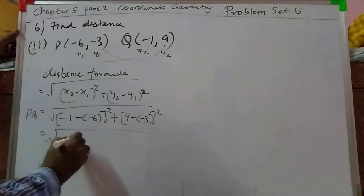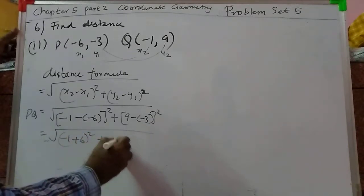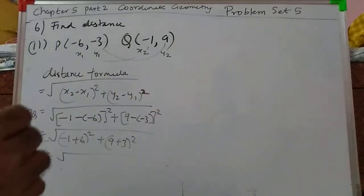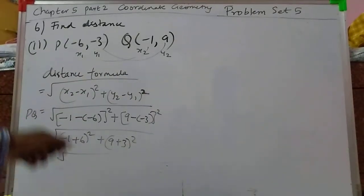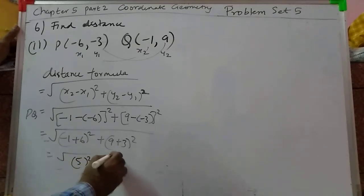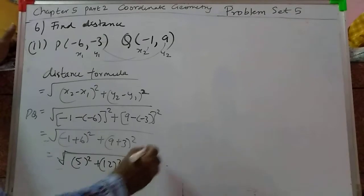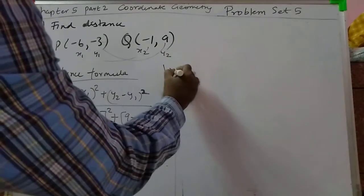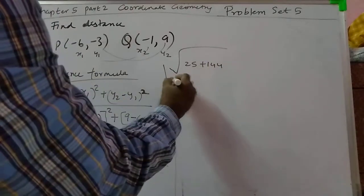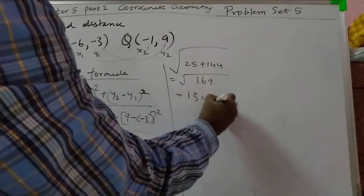So that becomes minus 1 plus 6, the whole square, plus 9 plus 3, the whole square. That gives 5 squared plus 12 squared, which is 25 plus 144 — add it to get 169. Therefore the distance is equal to 13 units.